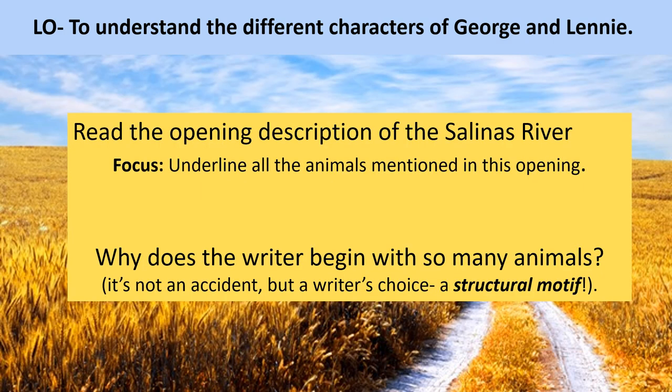Let's get to grips with the novel itself. I'd like you to open the very first page, which is a description of the Salinas River. If you've got your work booklet, this extract is also in there. What I'd like you to do is read that opening — it's about three paragraphs long altogether — and underline all the animals that are mentioned. I think in the work booklet I've underlined the first one for you, which is a lizard. There are about seven or eight different animals mentioned. What I'd like you to consider is: why does the writer begin with so many different images of animals? This is not an accident — Steinbeck deliberately does this. A recurring image like this is what's known as a structural motif. So pause this video and have a go at that task in your booklet.